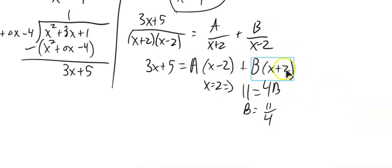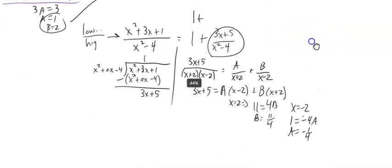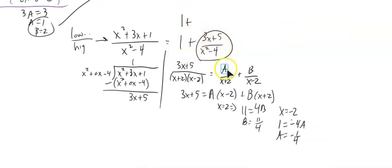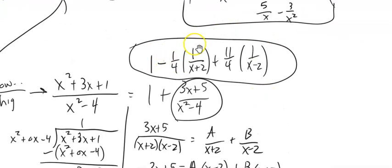Putting all the pieces together: 1 plus negative 1 fourth over x plus 2, plus 11 fourths over x minus 2. To clarify, there are multiple ways to write this — you can put the fraction coefficient on top or write it as a constant times 1 over the factor. All the same thing.